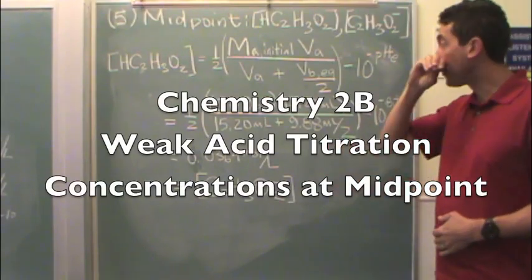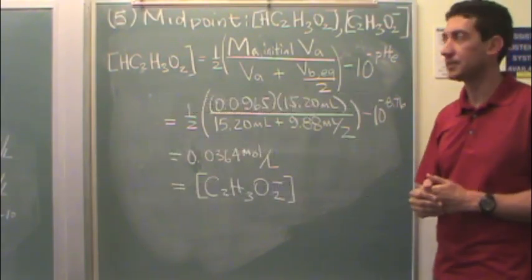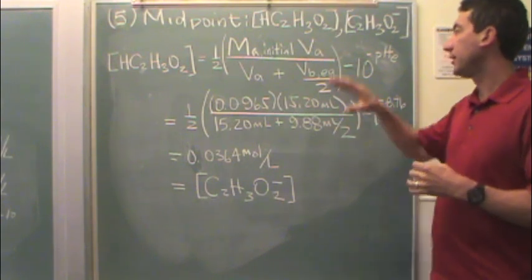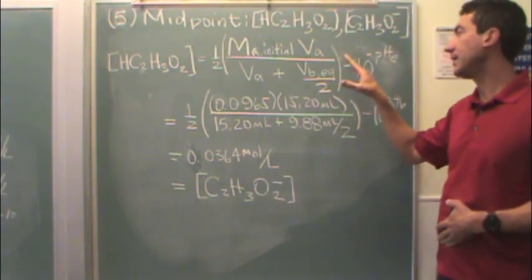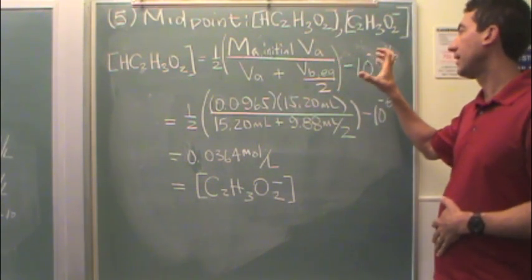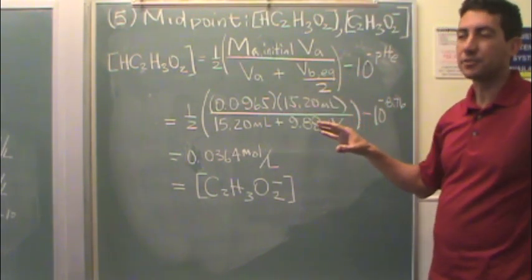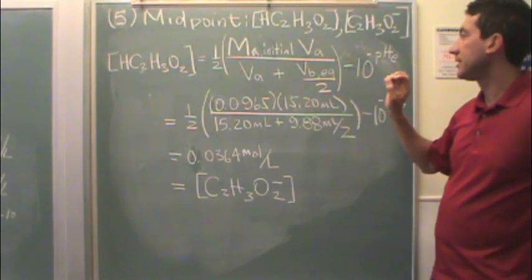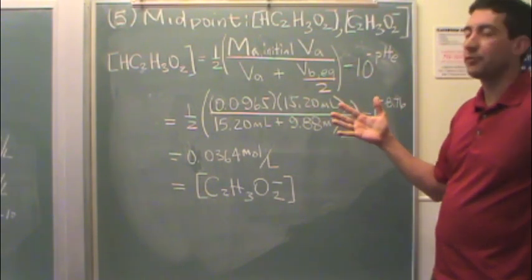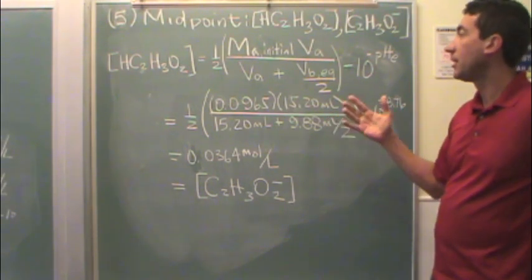Finally, at the midpoint, we want to find concentrations. You're going to get this formula when you're doing the post lab. This essentially comes from finding the concentrations, and that can be derived through a stoichiometric table.